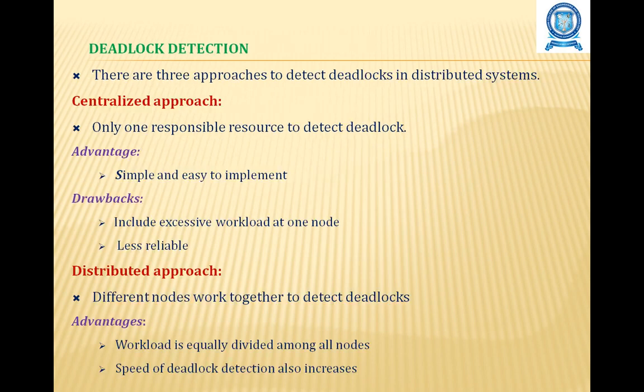There are three approaches to detect deadlocks in distributed systems. The first is the centralized approach, where only one node is responsible for detecting deadlocks. The advantage is that it is simple and easy to implement. The drawbacks include excessive workload at one node and a single point of failure, which makes the system less reliable.